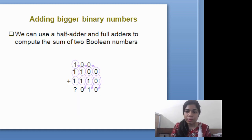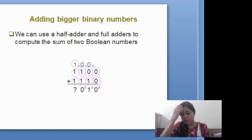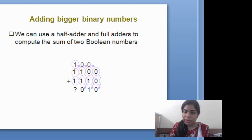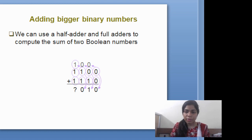Adding binary numbers. We have already done the decimal number system and decimal addition, but binary addition is a little different. Let's see how it is different. Zero plus zero: sum will be zero, carry will be zero. Zero plus one: sum is one, carry is zero. One plus one: zero is the sum, and a carry will be generated which is shifted forward and added to the next column.